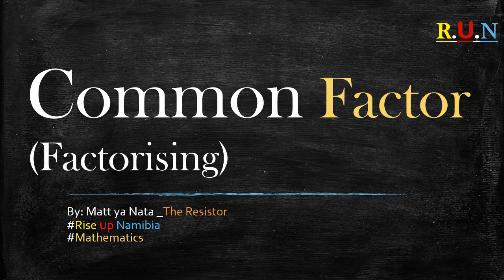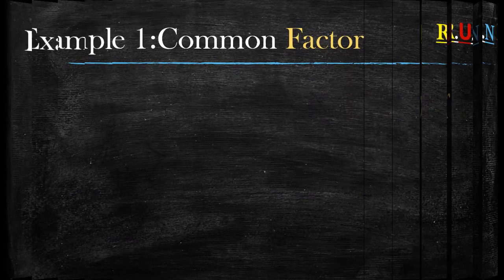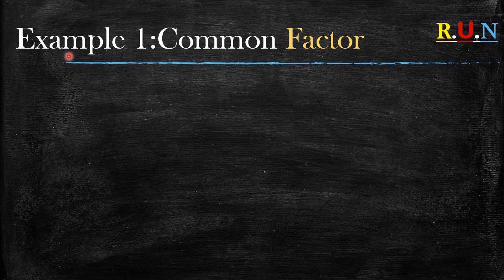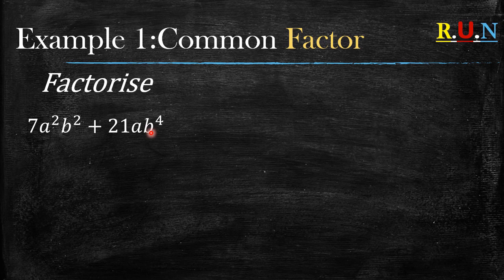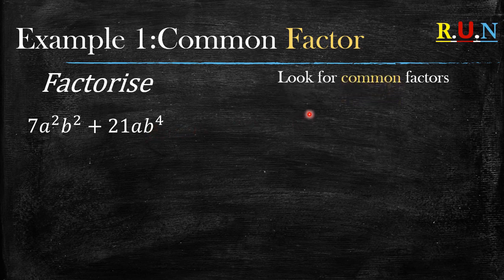So, example number one: common factor. What do you do when you're given a question like this? Let's say factorize this. Rule number one: look for common factors. So what do we mean? What are the factors of 7 and the factors of 21?